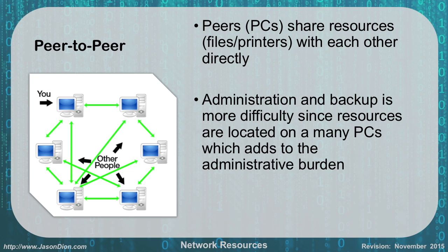The next type is peer-to-peer, where you connect directly to other people. For instance, if Michelle has files on her hard drive she wants to share, she can share them locally through her Windows 8 PC. The big problem is that without a dedicated network operating system, she has a file-sharing limit — generally around 10 users that can connect to her. And as soon as Michelle goes home and shuts down her computer, those files are no longer accessible.